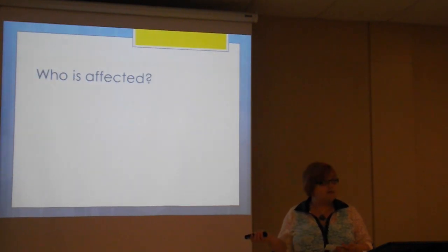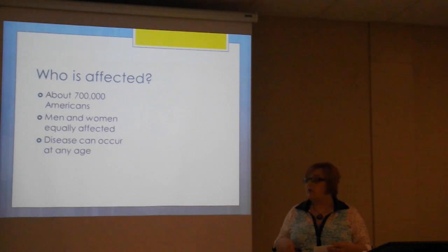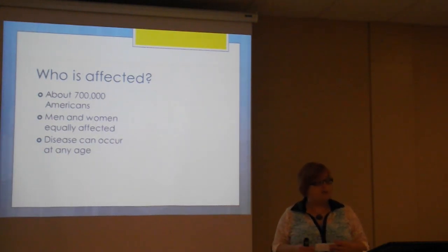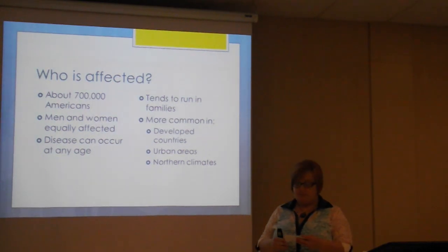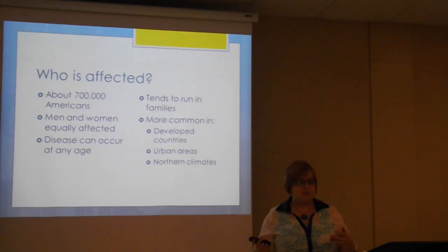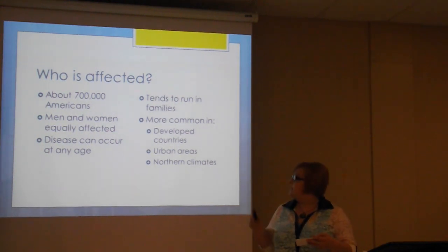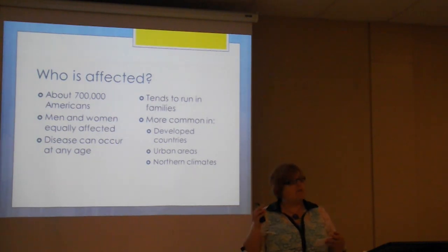About 700,000 Americans are diagnosed with Crohn's disease. It affects men and women equally, and the disease can occur at any age, but it's most prevalent between the ages of 15 and 35. It tends to run in families — 5 to 20% of people with Crohn's also have a first-degree relative such as a parent, child, or sibling with the disease. It's more common in developed countries, urban areas, and northern climates.